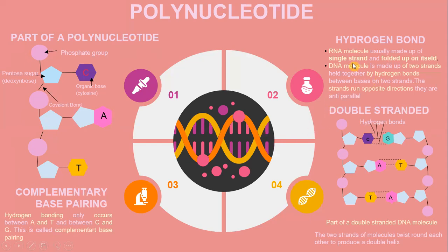An RNA molecule is usually made up of a single strand folded up on itself. A DNA molecule is made up of two strands held together by hydrogen bonds between bases on the two strands. The strands run in opposite directions — they are anti-parallel. Complementary base pairing occurs only between A and T (adenine and thymine), and between C and G (cytosine and guanine).